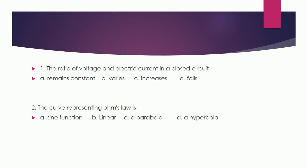The ratio of voltage and the electric current in a closed circuit: remains constant, varies, increases, or falls? The correct answer is C — increases. The curve representing Ohm's law is what? Sin function, linear, parabola, or hyperbola? The correct answer is B — linear. The curve representing Ohm's law is linear.